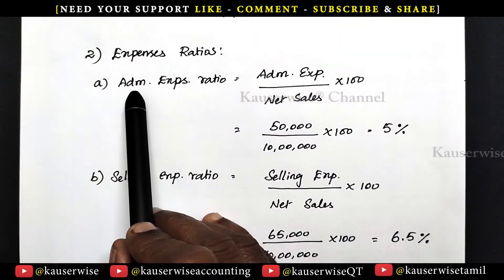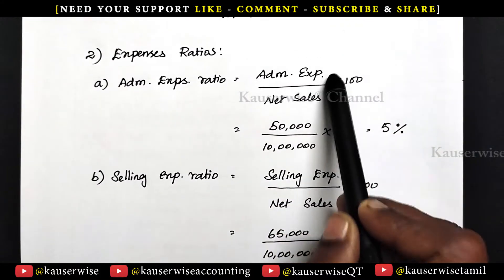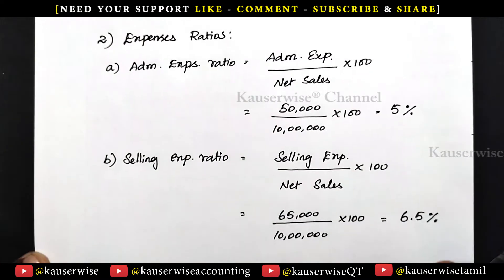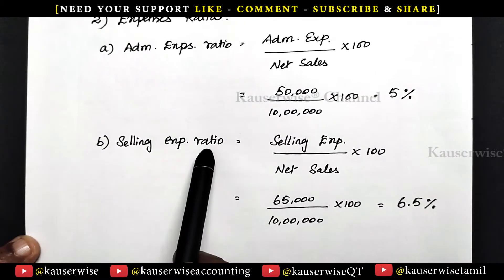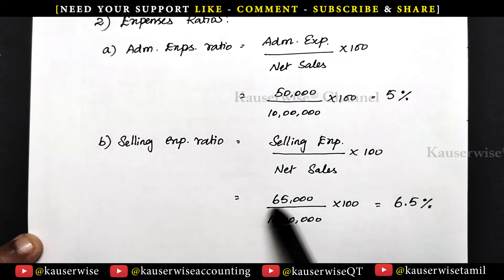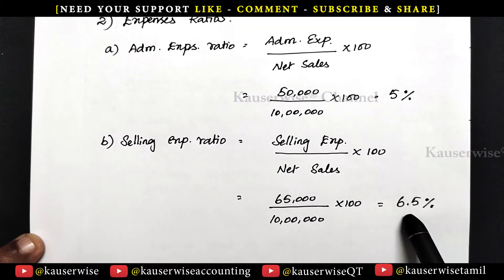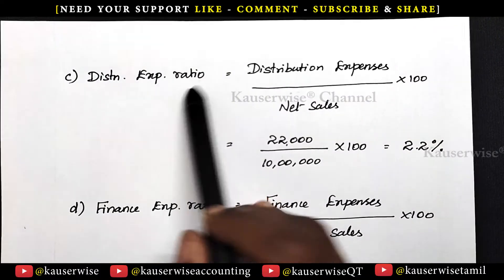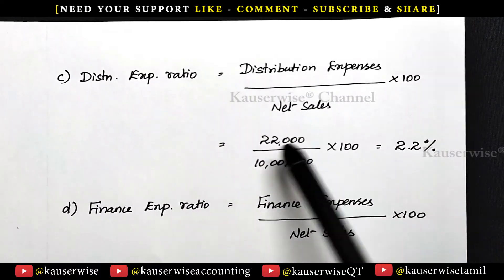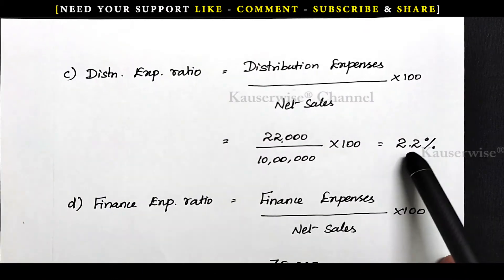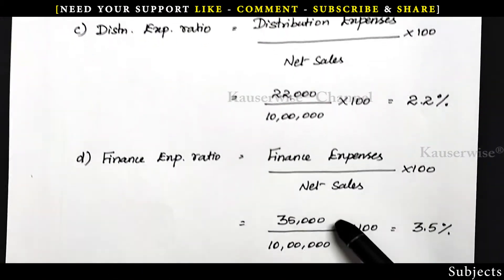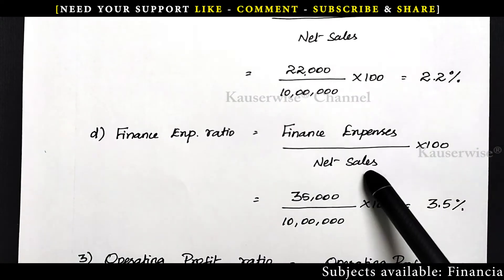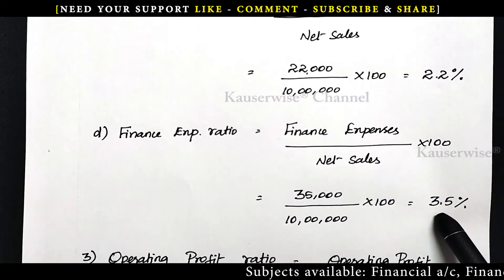For administrative expense ratio: 50,000 divided by net sales 10 lakhs into 100 equals 5 percentage. For selling expense ratio: 65,000 divided by net sales 10 lakhs into 100 equals 6.5 percentage. For distribution expense ratio: 22,000 divided by 10 lakhs into 100. For finance expense ratio: 35,000 divided by net sales 10 lakhs into 100 equals 3.5 percentage. These are the different specific expense ratios.